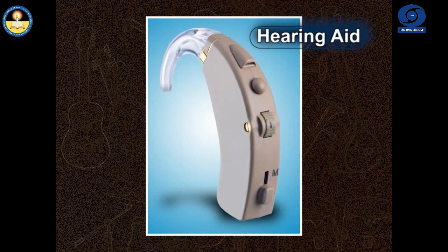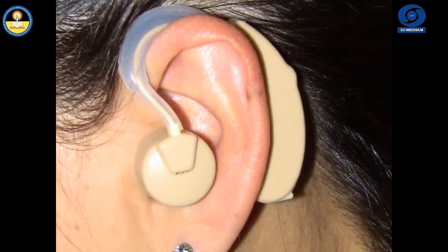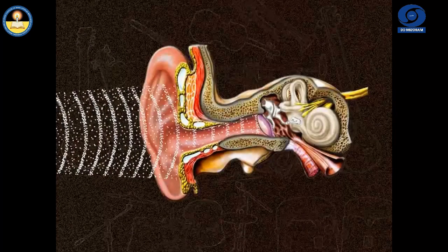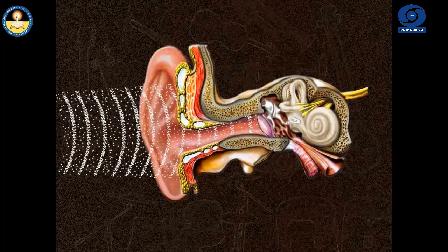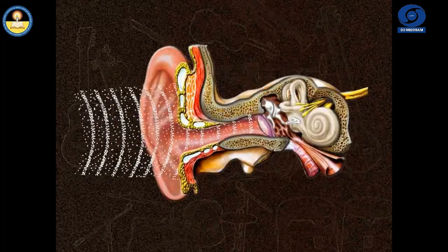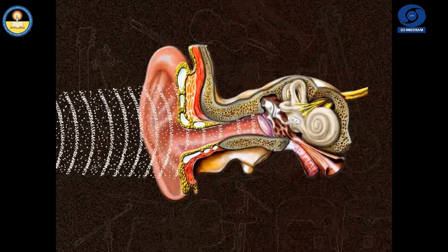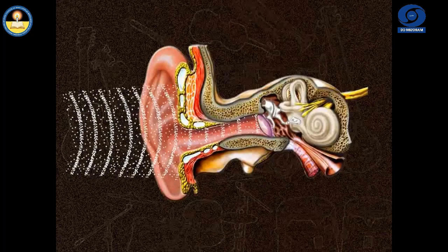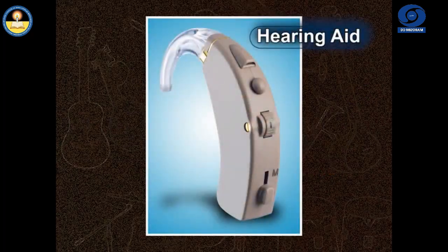Hearing aid is commonly used by people who are hard of hearing. Sound waves received by the hearing aid are reflected into a narrower area leading to the ear, by virtue of which the hearing capacity of the person is enhanced.